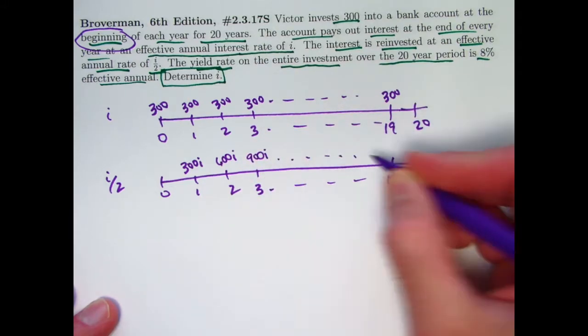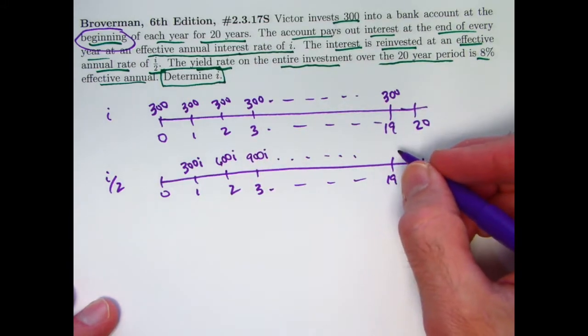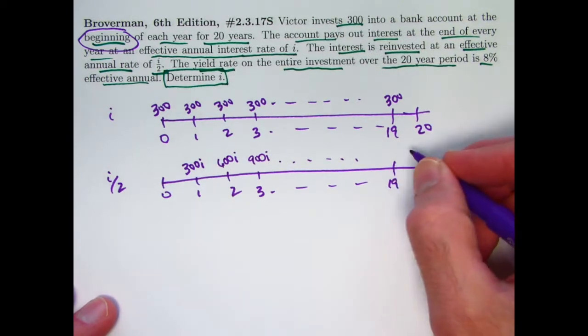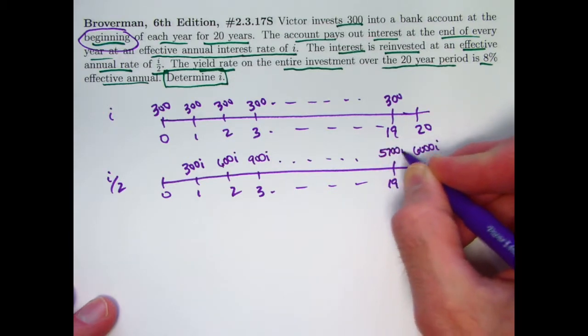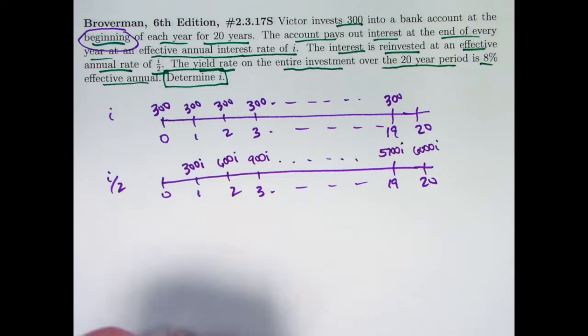The second account has payments going into it that form an annuity immediate. With 20 of them, the last one is going to be 6000i. The second to the last one is going to be 5700 times I.